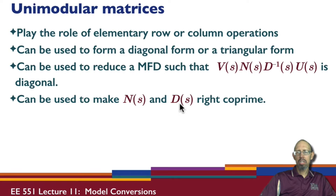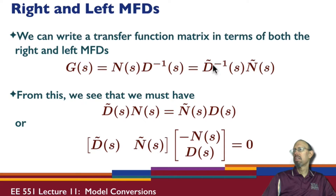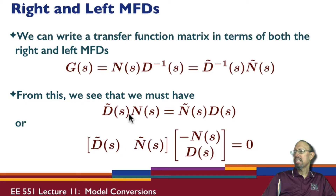The right matrix fraction description has N(s) times the inverse of D on the right. The left matrix fraction description has the inverse of D̃ on the left — and the N's and D's may be different, denoted with a tilde. Multiplying both sides by D on the right and D̃ on the left gives the relationship: D̃·N(s) − Ñ(s)·D(s) = 0.